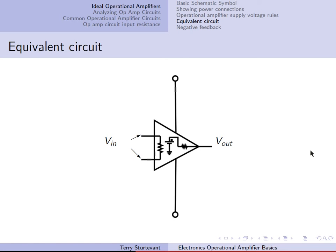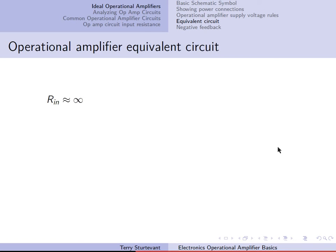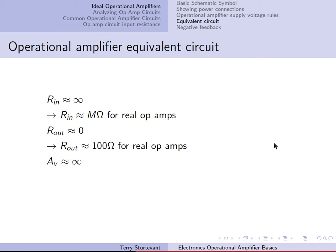Here's the equivalent circuit of an operational amplifier. There is a finite resistance between the two inputs, a voltage source, and some series resistance to the output. The input resistance is ideally approximately infinite — in fact, it's usually on the order of megaohms for real op-amps. The output resistance ideally is zero, but in fact it's on the order of 100 ohms for real op-amps. The voltage gain ideally would be infinite; in fact, it tends to be in the range of 10,000 to 100,000 for real op-amps. The output voltage is given by the voltage gain times the difference between the non-inverting input and the inverting input.